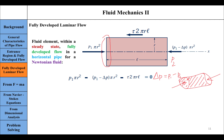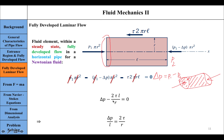To simplify the force balance equation, we divide throughout by πr². Terms cancel, and we are left with an equation that can be written in terms of the pressure drop per unit length.